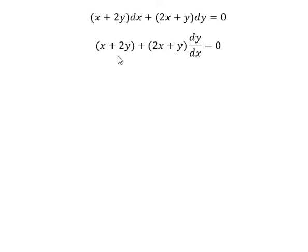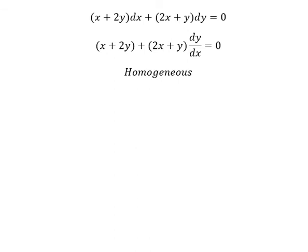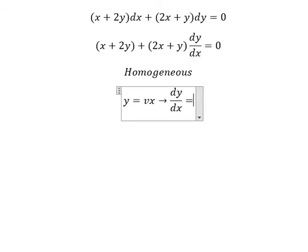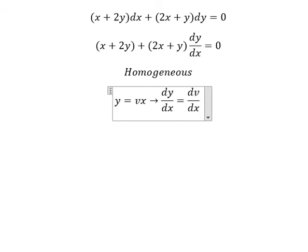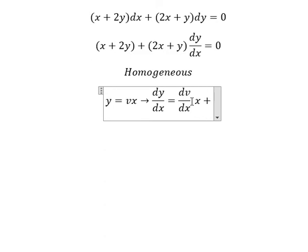Next, we have x, y over x, y. This is about homogeneous. So I will put y equals to vx. So if we do the first derivative for both sides, we have dy over dx equals to. We need to do the first derivative of v. So we have dv over dx multiplied by x plus the first derivative of x, which gives v.